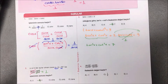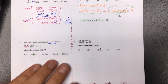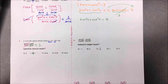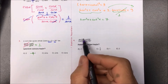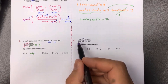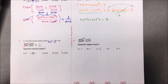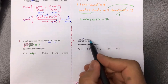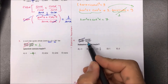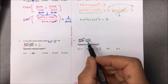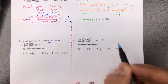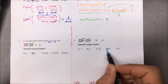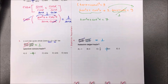Dördüncü soruda verilen ifadede sin(25)·cos(65) birbirini 90 derece tamamlıyorlar ve sadeleşiyorlar; cot(35)·tan(55) de yine 90 derece tamamlıyorlar ve sadeleşiyorlar. Aradığımız yanıt 1 olarak bulunur.